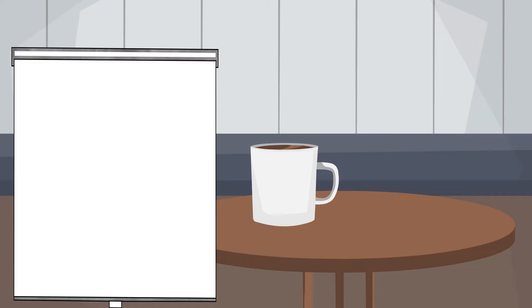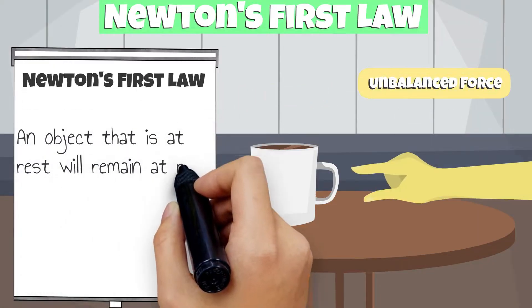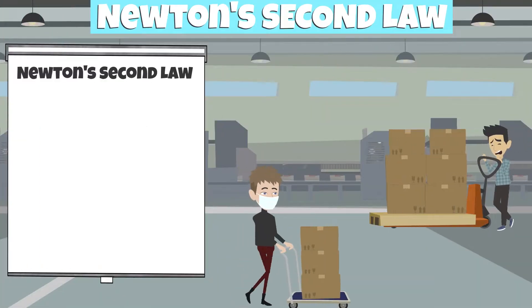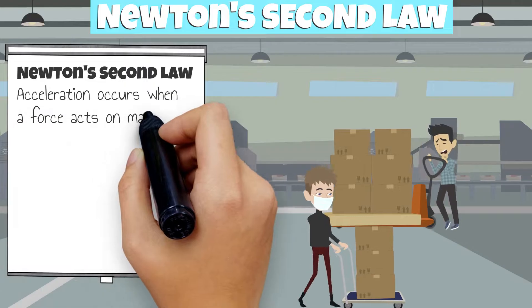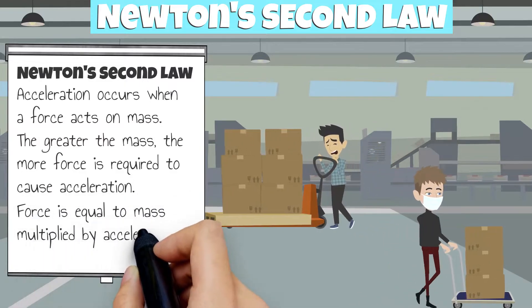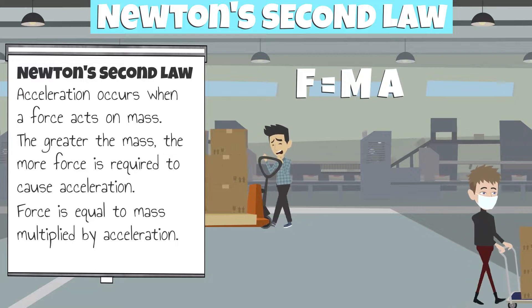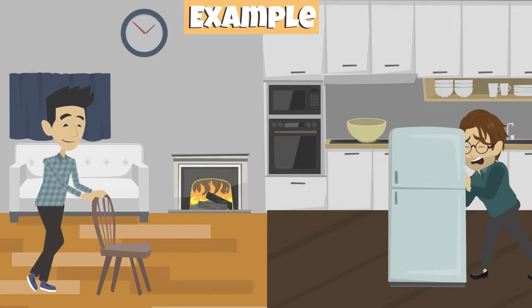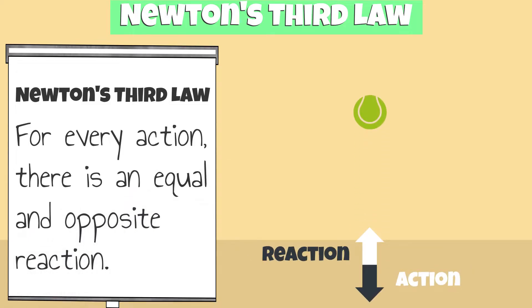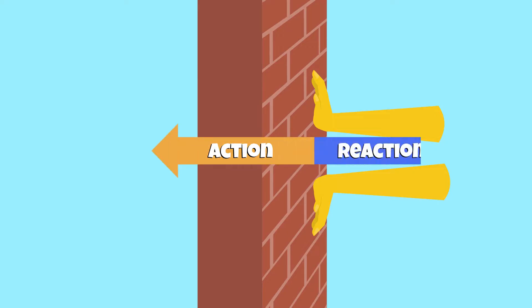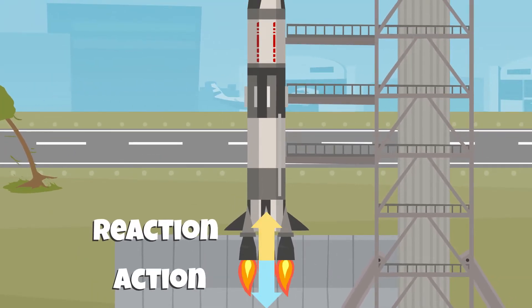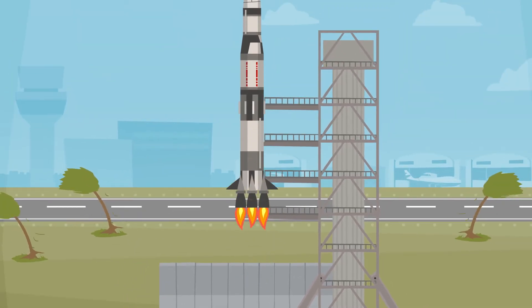Let's review what we just learned. Newton's first law of motion states that an object at rest will remain at rest unless acted upon by an unbalanced force — for example, a ball that is kicked. Newton's second law states that acceleration occurs when a force acts on a mass; the greater the mass, the more force is required. Force equals mass multiplied by acceleration, or F = MA. Pushing a fridge requires greater force than pushing a chair. Newton's third law states that for every action there is an equal and opposite reaction — when you push a wall, it pushes back with equal force. With rockets, the action of fast hot gases through the nozzle produces the reaction of the rocket accelerating forward.